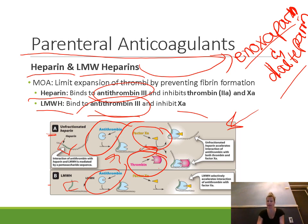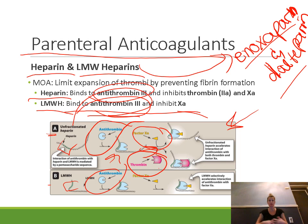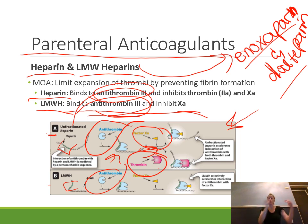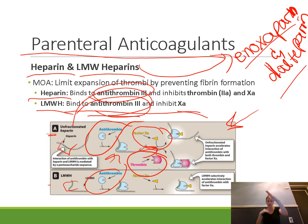Low molecular weight heparins still bind to antithrombin 3 and increase its activity, but mostly inhibit factor Xa. Factor Xa is higher up in the cascade — when activated it acts as prothrombinase, converting prothrombin into thrombin, which then converts fibrinogen into fibrin. So heparin is preventing both prothrombinase and thrombin activity. Low molecular weight heparins mostly stop prothrombinase from converting more prothrombin into thrombin, but don't inactivate thrombin that already exists.